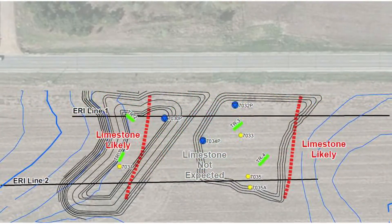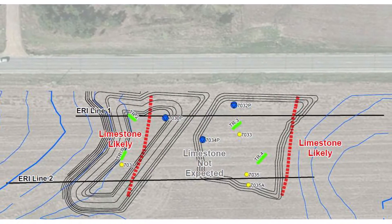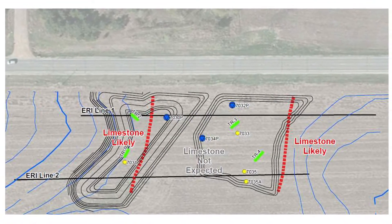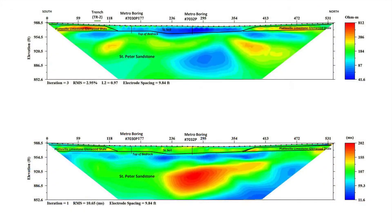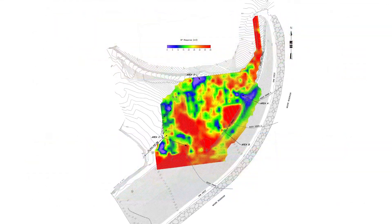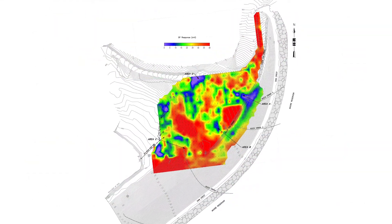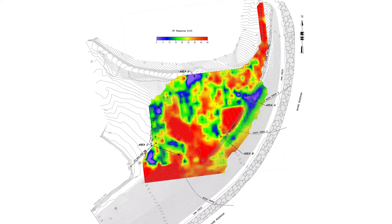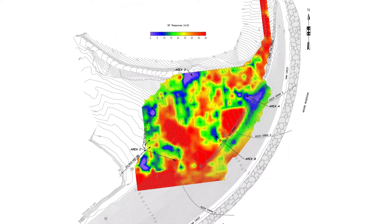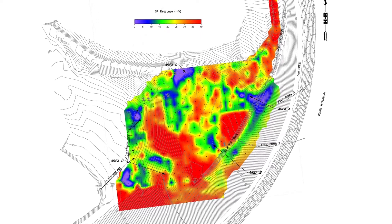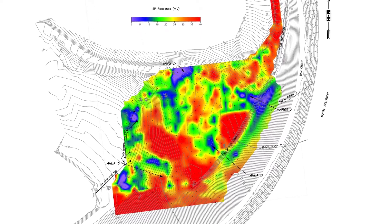Electrical resistivity is the most common electrical geophysical technique used in subsurface investigation projects, but there are others. Induced polarization is a technique in which the change in resistivity of the ground with frequency is measured. In self-potential, changes in electric potential are measured, which are a result of conditions such as fluid flow and mineralogy variations. These techniques are particularly useful in identifying variations due to mineralogy, groundwater conditions, and groundwater flow.